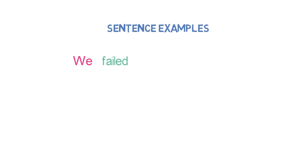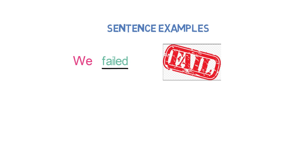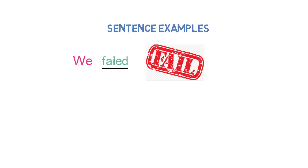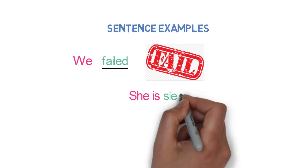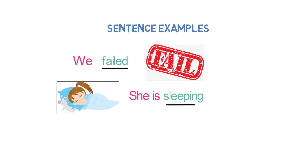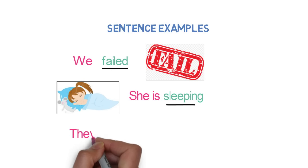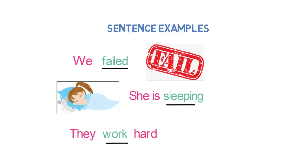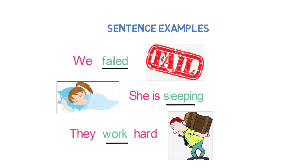Let's look into some more sentence examples having intransitive verbs. We failed. Here, 'failed' is an intransitive verb as there is no direct object linked with it. She is sleeping. Here, 'sleeping' is an intransitive verb as there is no direct object linked with 'she.' They work hard. Here also, 'work' is an intransitive verb as there is no direct object after the verb.